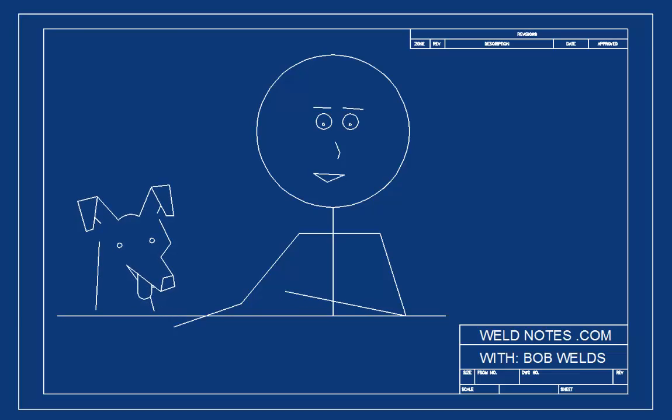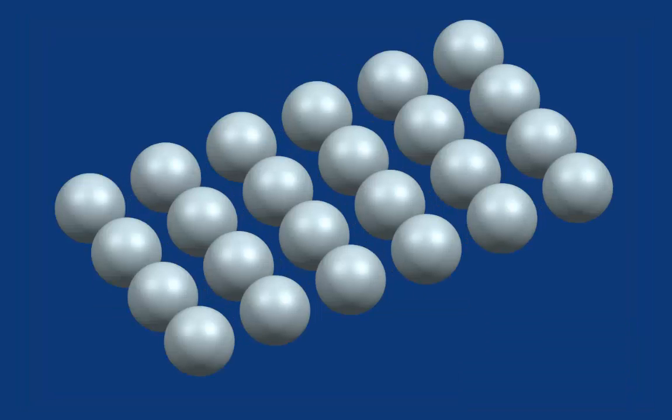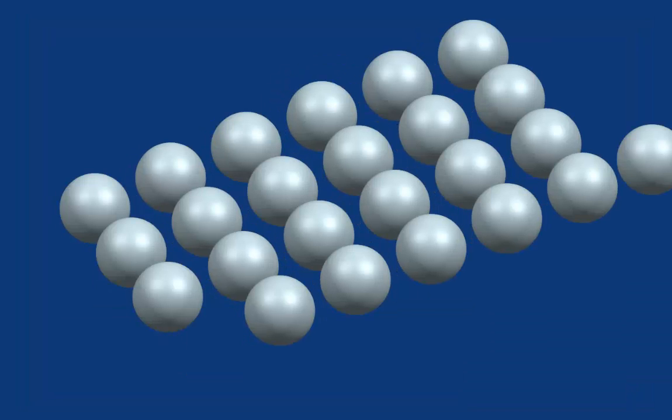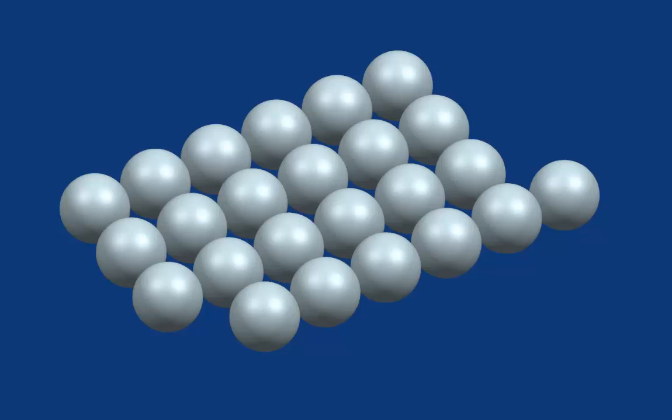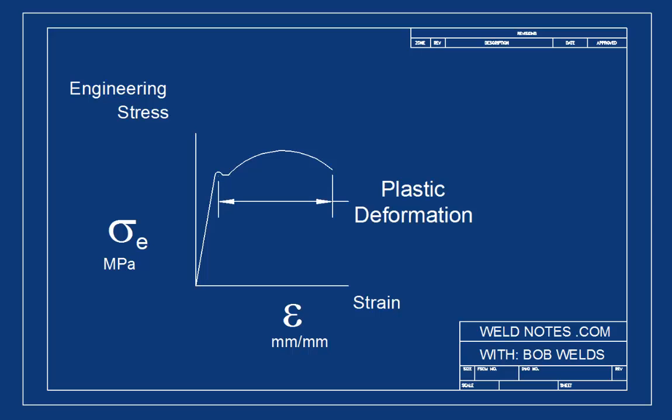You see, the deformation here is no longer elastic. We are permanently changing the shape of the steel, kind of like pulling on modeling clay. The bar will be permanently longer from now on. We call this kind of shape changing plastic deformation.